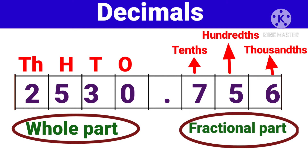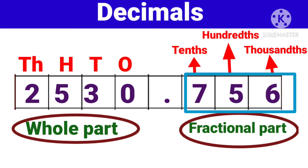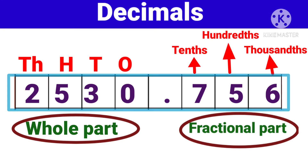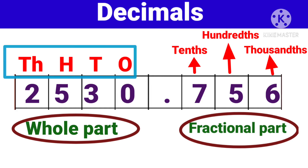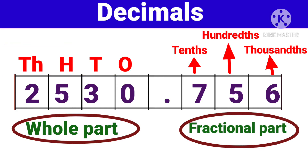Toh, hum isse kis tarah se read karenge? Whole part ko hum jis tarah se normal numbers ko read karte hai, hum usi tarah read karenge — jaise ki 2530. Ab fractional part — point ke baad wale numbers ko kis tarah se read karenge? So, the number is 2530 point 756.